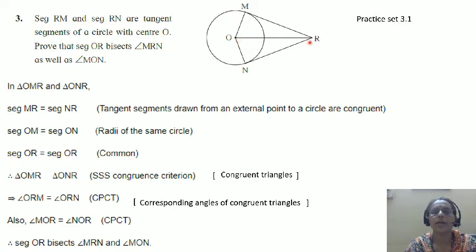Then angle ORM is congruent to angle ORN. Corresponding parts of congruent triangles. So OR bisects angle MRN.